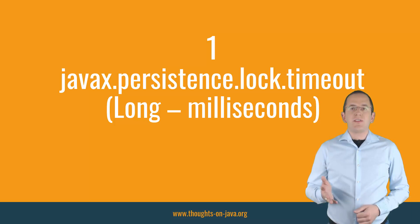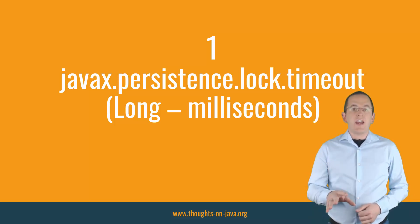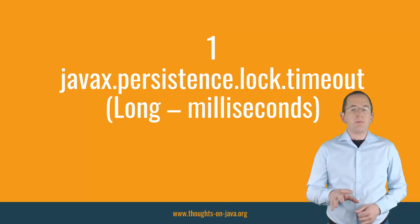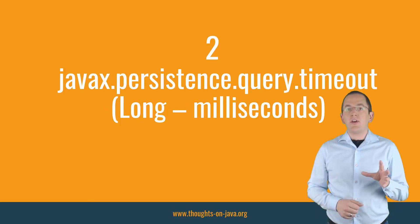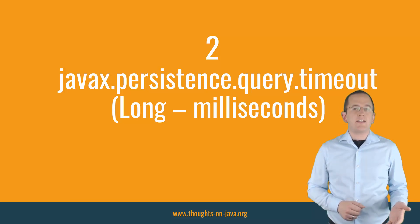Let's start with the hints defined by the JPA specification. The javax.persistence.LockTimeout hint defines the timeout in milliseconds to acquire a pessimistic lock. The javax.persistence.QueryTimeout hint defines how long a query is allowed to run before it gets cancelled.